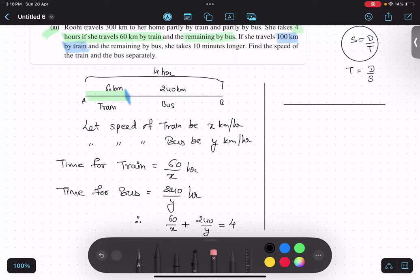And in the second condition, they are saying she traveled 100 kilometer in train. So what is the distance covered in bus? 200. And what is the total time taken? 10 minutes longer, so 250. 250? How 250?